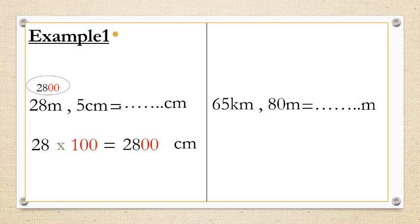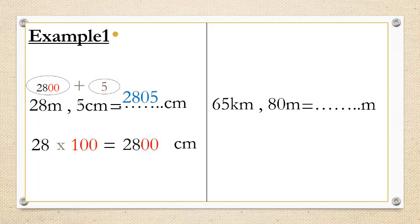So 2800 corresponds to 28 meters. This is 5 centimeters, and this unit is already centimeters, so we don't need to change it — it's the same unit. The comma means plus, so we write down 5 and make addition. 5 plus 0 equals 5, bring down 0, bring down 8, bring down 2. The answer is 2805 centimeters.